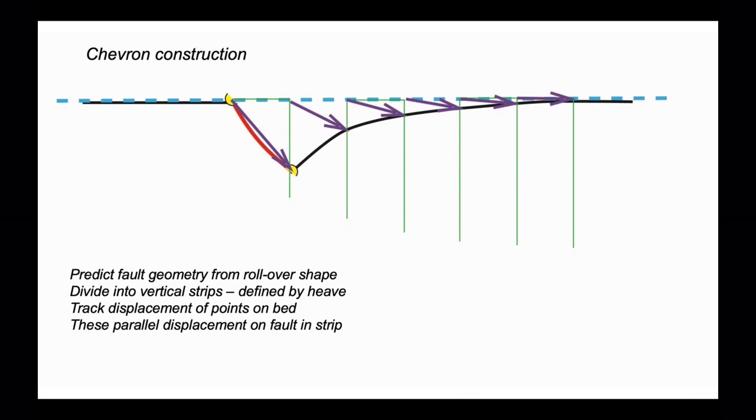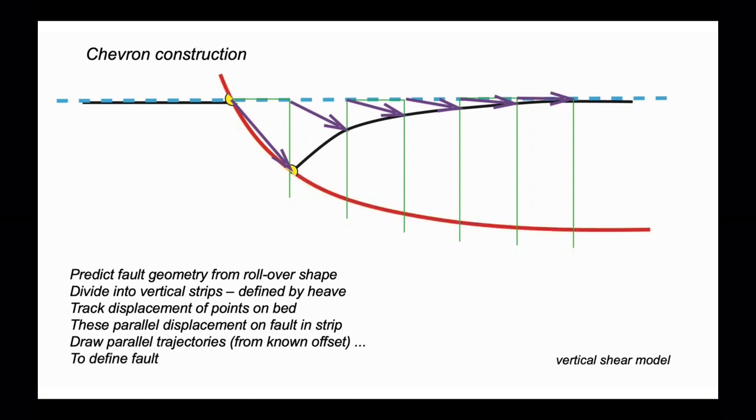These trajectories are parallel to the displacement of rocks along the fault plane. We can project these down, joining each to the last, starting on the left hand side and projecting one onto the other to define an arcuate shape. This tracks the fault trajectory. Here we have a prediction on the basis of the fold, the shape of the rollover anticline that forecasts the shape of the fault.